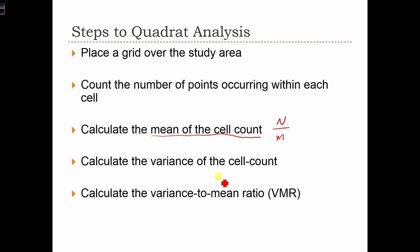Then we're going to calculate the variance of the cell count. So the variance is going to be composed of the sum of Xi minus X bar squared, over M minus 1. And here, Xi is the number of points occurring in quadrat I.